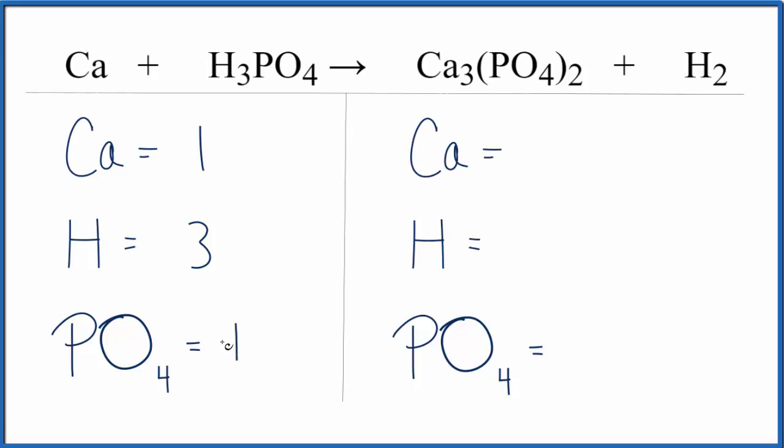and that'll make it a lot easier when we go to balance. We have three calciums here, two hydrogens, and then the PO4, I have two of them. So that makes it kind of easy to fix.